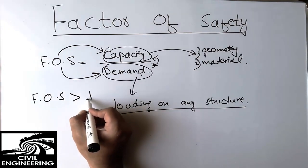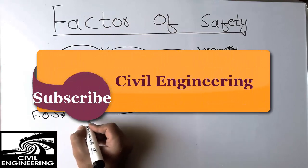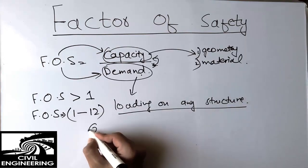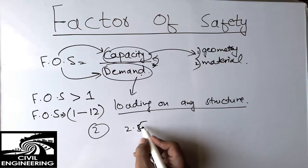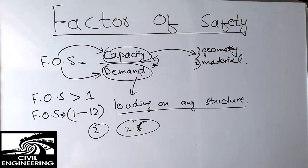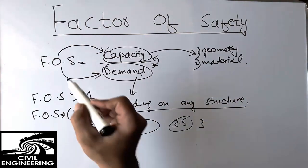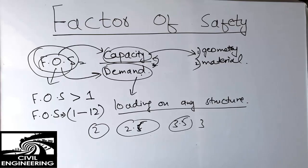The factor of safety for civil engineering structures should always be greater than one, and it typically ranges from one to twelve. It depends on the importance of your structure. For example, ordinary homes may have a factor of safety of around two. Multi-story buildings may require two to two point five. For large bridge structures or piling foundations, we take a factor of safety of maybe three to three point five.